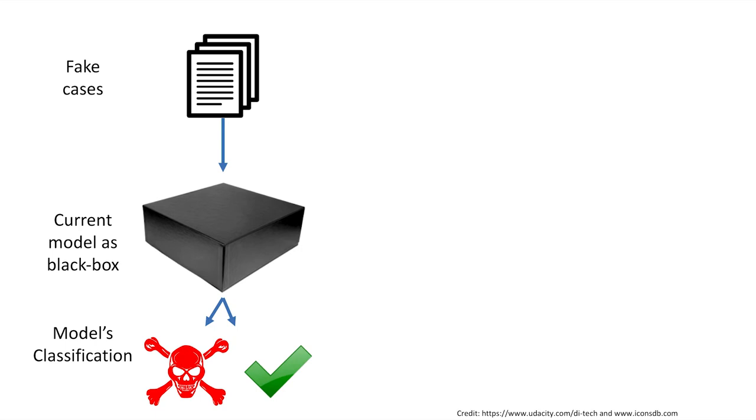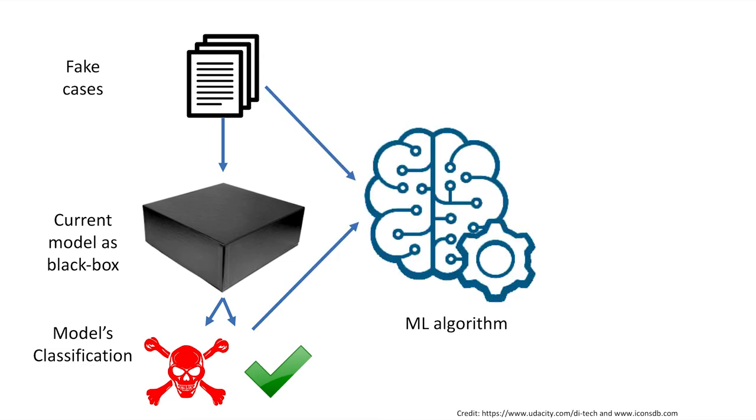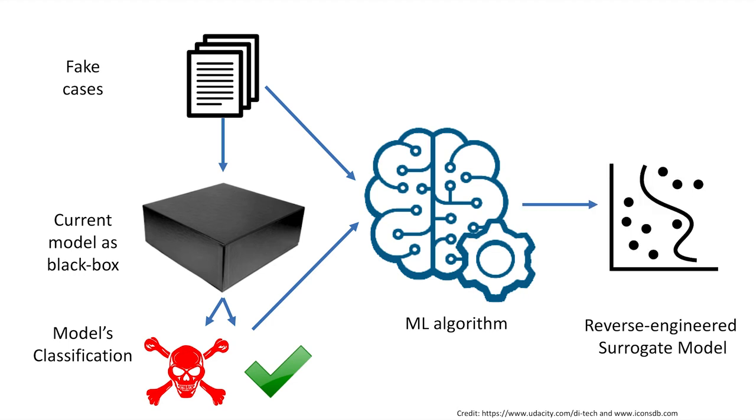Once the surrogate model is obtained, we can take an existing malicious code and gradually modify it. After each modification, we check if the modified code can still be detected by the surrogate model. The process continues until the modified code is misclassified as benign.